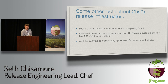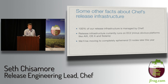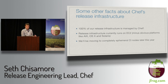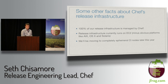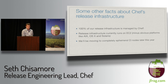Our release infrastructure currently is mostly on EC2, minus some obvious platforms like AIX and OS X that won't run on EC2. We're moving to ephemeral CI nodes later this year — we want to spend less money, bring slaves up only when needed, guarantee a clean build and test environment for each job, support concurrent builds, and use larger instances for faster builds — which makes happy developers.